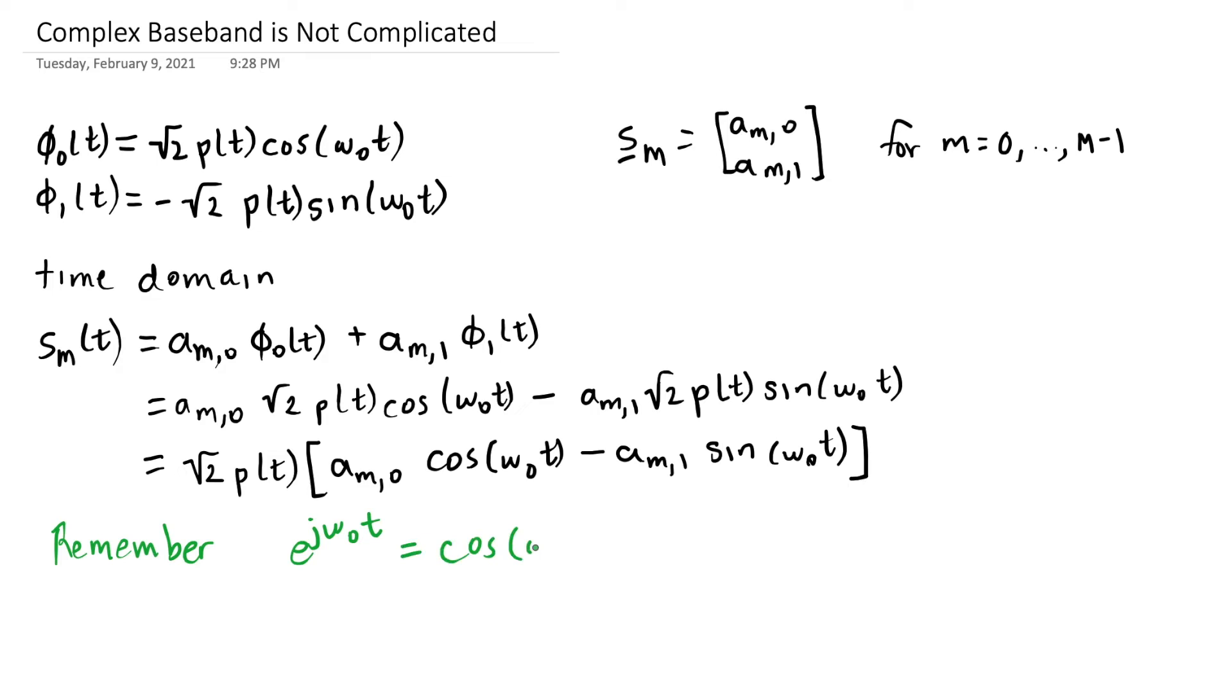That a complex exponential e^(j omega_0 t) is the cosine at omega_0 t plus j times the sine at omega_0 t. And we have this operator called the real operator and that takes just the real part out of the complex value that we've written, so in this case the omega_0 t.